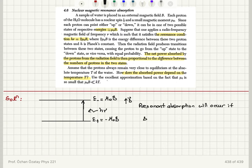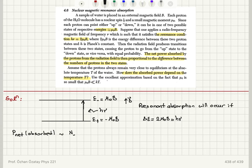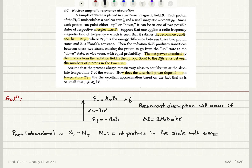Remember, if we have the difference in energies between these two levels, 2μ₀B equals hν — the energy of the photon being absorbed. The problem states that the net power absorbed varies as the number of protons in the state with energy E minus, minus the number of protons in the state with energy E plus.